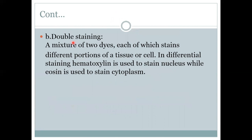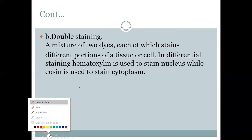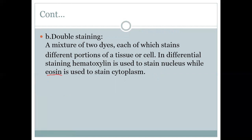Double staining uses a mixture of two dyes, each staining a different portion of a tissue or cell. In differential staining, hematoxylin is used to stain the nucleus while eosin is used to stain the cytoplasm. This is an important MCQ point: hematoxylin stains the nucleus and eosin stains the cytoplasm.